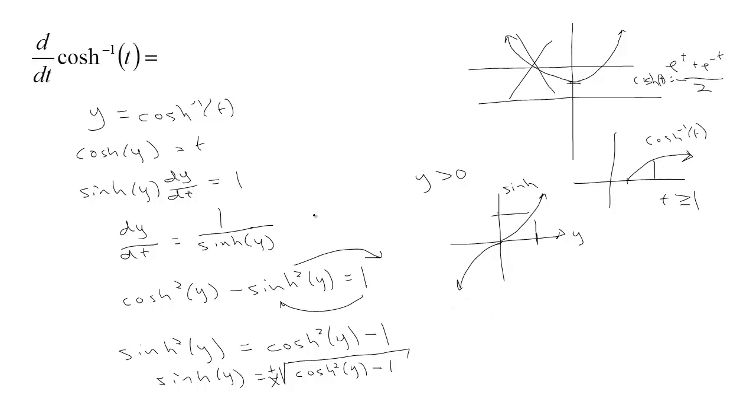Okay, so, if we have 1 over the sinh y, then we know that's 1 over the square root of the cosh squared of y. But in our case, we know the cosh of y is t, so we have t squared minus 1.